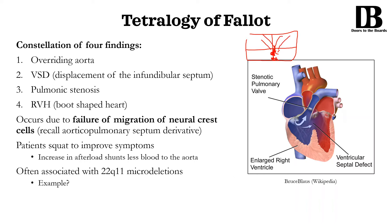This septum is forming that membranous portion. Now if the neural crest cells aren't migrating properly, what ends up happening — imagine that this is the aorta and this is the pulmonary trunk — their septum is going to move slightly this way, so it doesn't meet the muscular portion of the ventricular septum. Because of this, the first thing you can very clearly notice is that the aorta is actually taking a little bit of space from the pulmonary trunk, so the pulmonary trunk got much smaller, and the aorta is overriding both the left ventricle as well as the right ventricle. So our first finding is this overriding aorta.